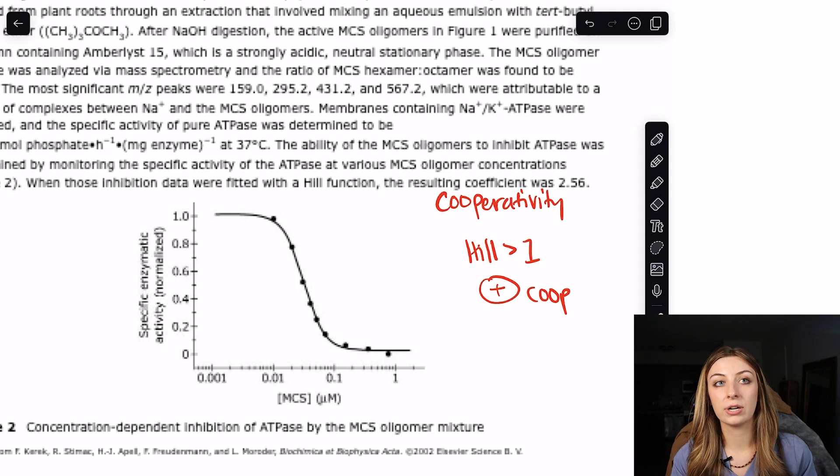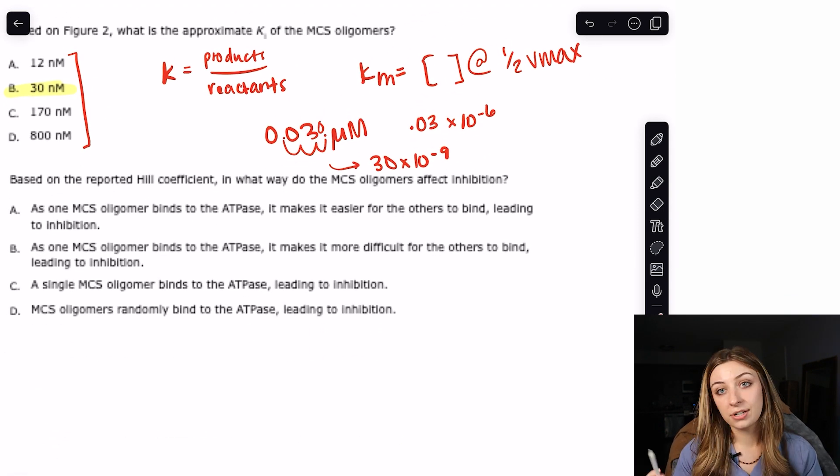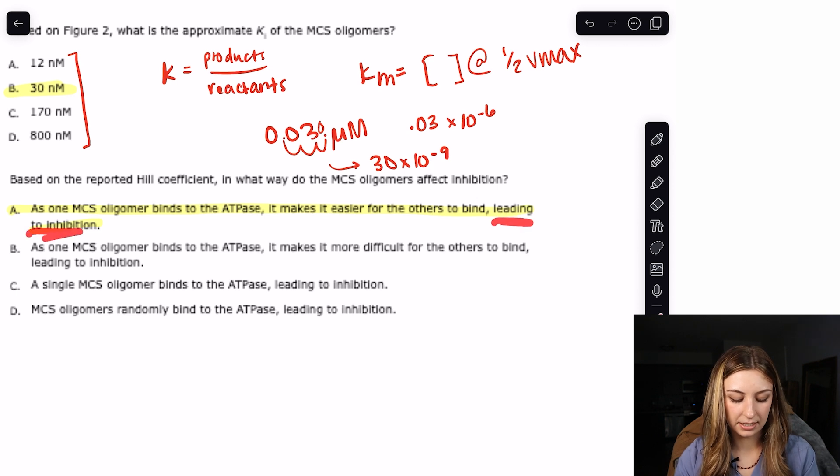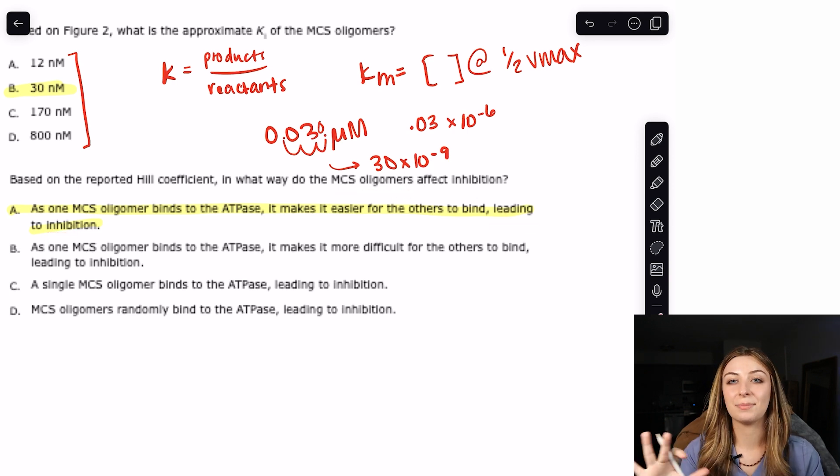It's most commonly talked about in hemoglobin. And I think that's a good schema to have in your brain about how this works, because it's the only thing I think of when I think of cooperativity. But I don't need another example because hemoglobin is such a good example. So based on the Hill coefficient of 2.36, how does the MCS oligomers affect inhibition? You just got to choose the answer choice that is the definition of positive cooperativity. So that's A. Don't let this little last part leading to inhibition trip you up. The whole point of the MCS oligomer is to inhibit ATPase.